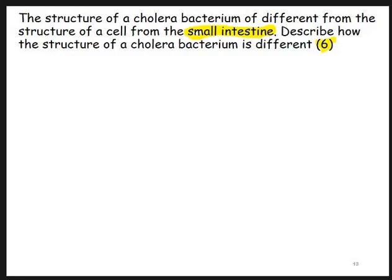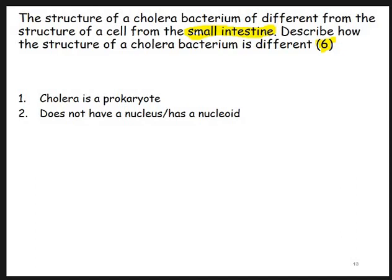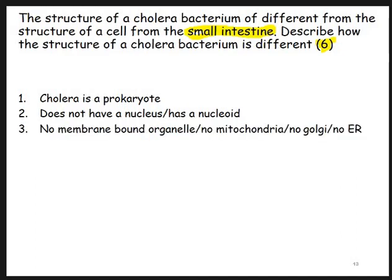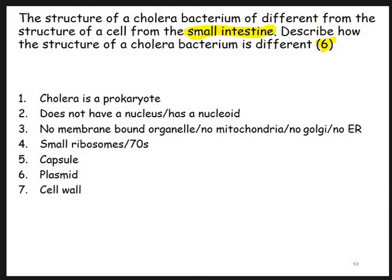For the answers: first, state that the cholera bacterium is a prokaryote - you get a mark for that. It doesn't have a nucleus, or conversely say it has a nucleoid. It has no membrane-bound organelles - or say it has no mitochondria, no Golgi, no ER. The ribosome in the eukaryotic cell would be 80S, whereas in the prokaryotic cell it would be 70S. Cholera, because it lives in water, has a capsule. It has a plasmid, which you would not find in a small intestine cell. And it has a cell wall, which again you wouldn't find in a small intestine cell.